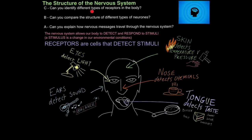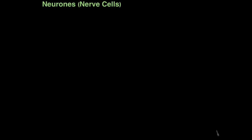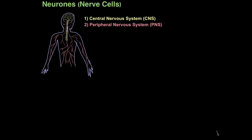And those are the different types of receptors in the body. So now let's look a little bit deeper at our nervous system and discover the real stars of the show, which are the neurons or nerve cells. Our nervous system can be divided into two distinct components. Firstly, you can see in yellow here, we have the central nervous system.